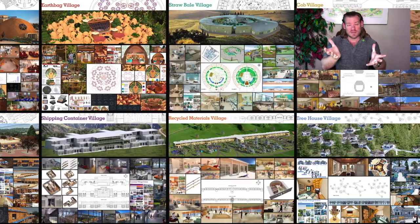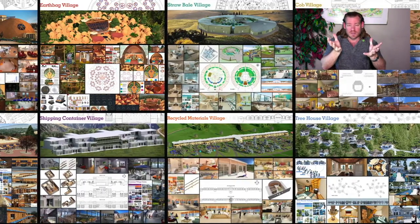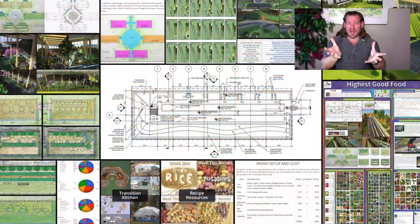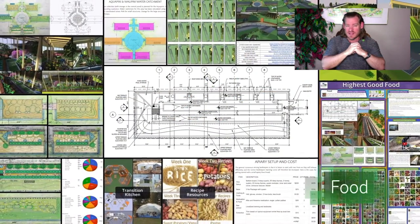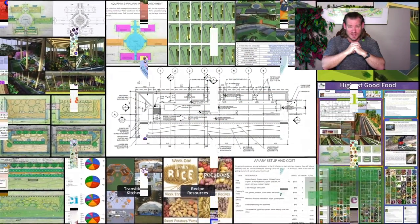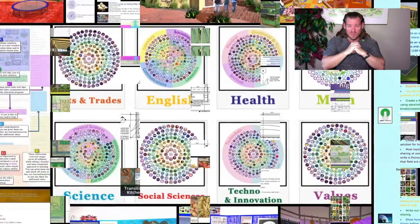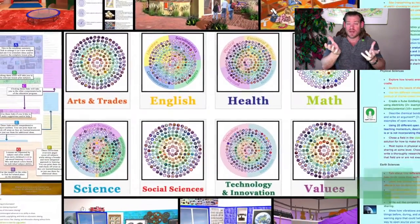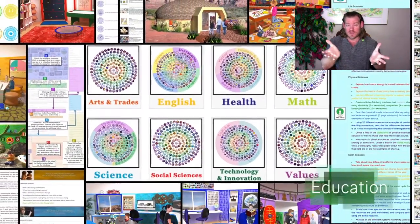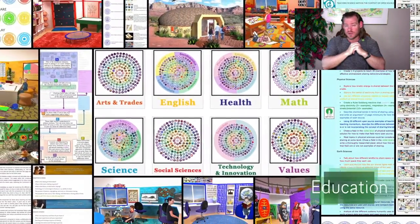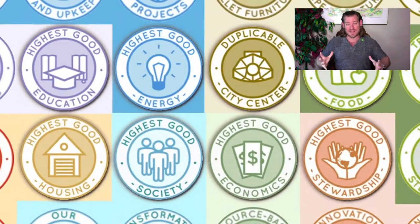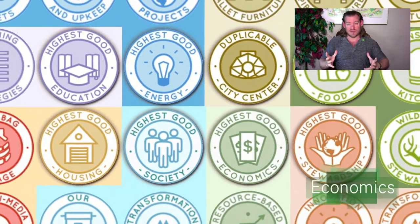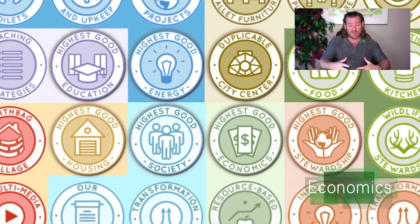When we talk about abundance through community living, we talk about more of the things that people like and want in their lives, and making that accessible to anybody. We feel that is more possible through community living, and we're creating open source tools, tutorials, resources, and do-it-yourself instructions for all aspects of comprehensively sustainable community living to provide that.